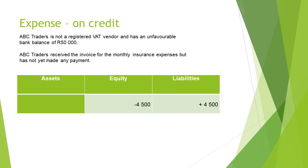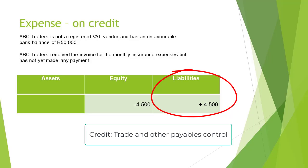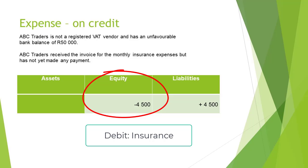If we once again use the same example, but now ABC Traders only received the invoice and did not make the payment yet, then the transaction will be recorded similarly to when the bank account had an unfavorable balance. Liabilities will increase with 4,500 rand because the business now owes the money to the supplier, and the trade and other payables account will be credited. Once again, equity will still be decreased by 4,500 rand because the expense account decreases equity. The expense account will still be debited.